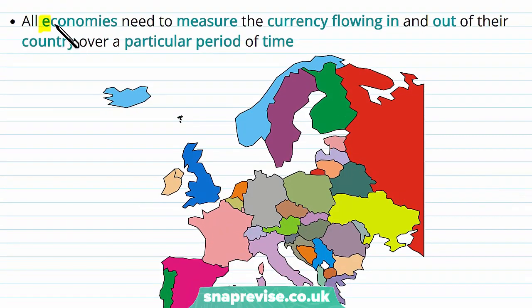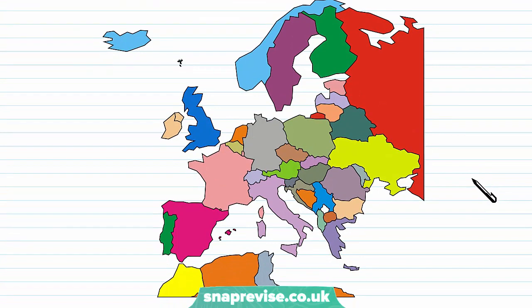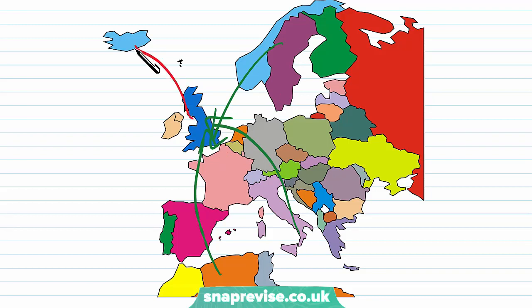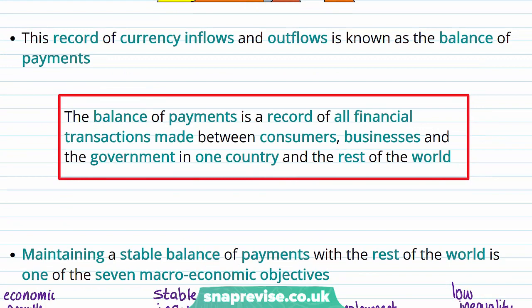All economies are going to have to measure the currency flowing in and out of their country over a particular period of time. So we can imagine within an economy — say we'll take Britain — there's going to be certain economic activities which will result in money flowing into the country, and equally there'll be certain economic activity which will mean money is going to be flowing out of the country to different locations. Therefore we can imagine there's some sort of record of currency inflows and outflows, which kind of looks a little bit like an accounting exercise, and this is known as the balance of payments.